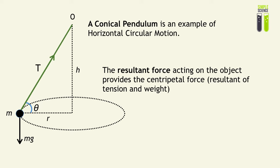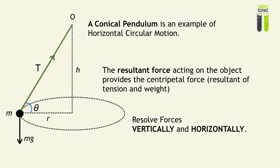In the case of the horizontal circular motion of the conical pendulum, the resultant force acting on the object is the resultant of the tension and the weight. In order to solve problems related to the conical pendulum, we must resolve the forces vertically and horizontally. The reason this model is called the conical pendulum is because the volume of revolution that the pendulum creates as it moves through the circle is a cone.